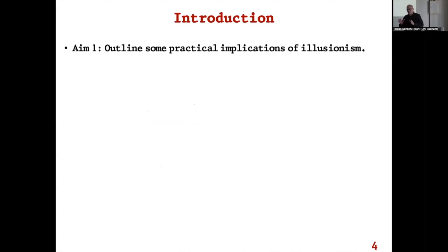What I want to do in this talk is not defend illusionism but outline some of its implications. If you adopt the view, what follows? What practical consequences follow for the way we do philosophy, science, the way we think about the ethics of consciousness, and so on?